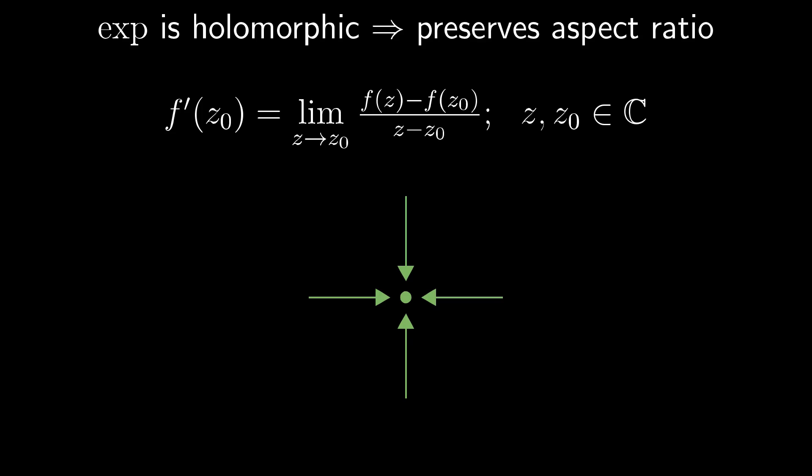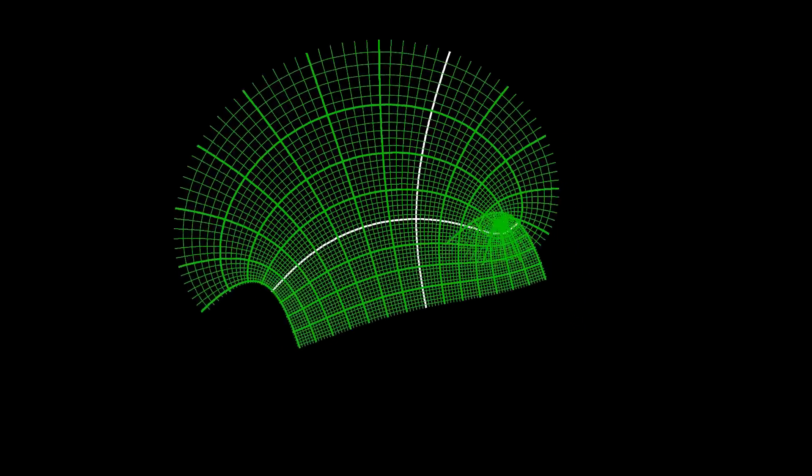Now we can use the fact that the derivative is the same in all directions. In a very basic way you could imagine the derivative as the frequency of crossing grid lines. Since the right angle between the grid lines is preserved and grid lines cross with the same frequency in both directions, we can conclude that the resulting image preserves the aspect ratio of infinitesimally small rectangles.